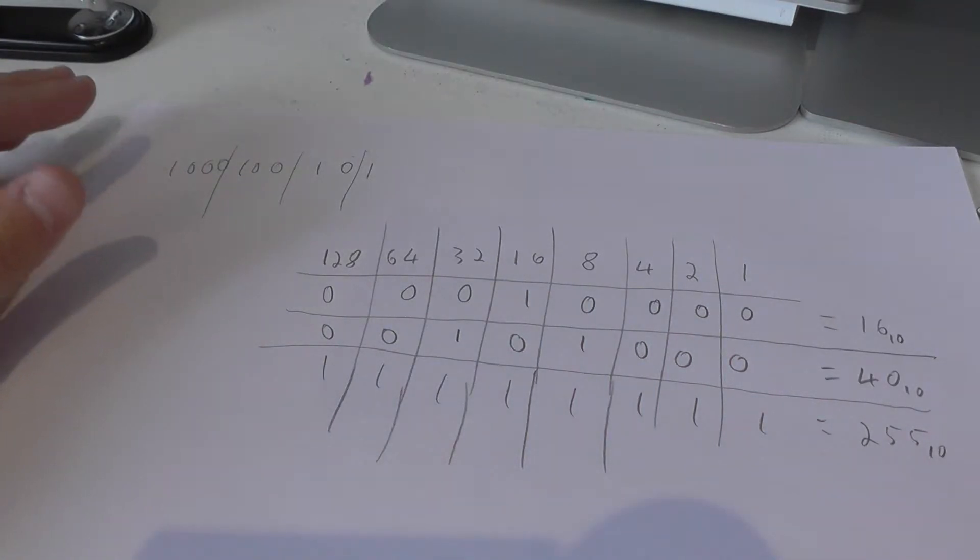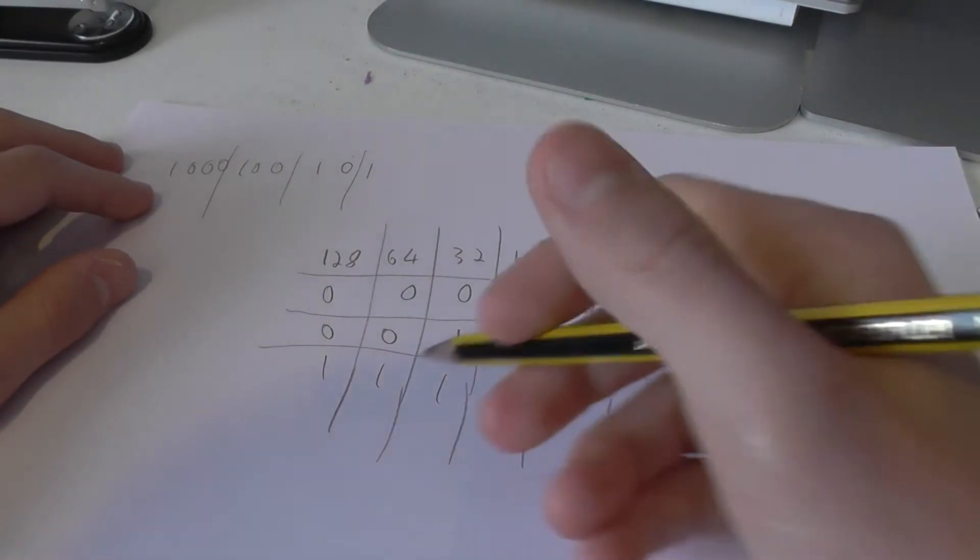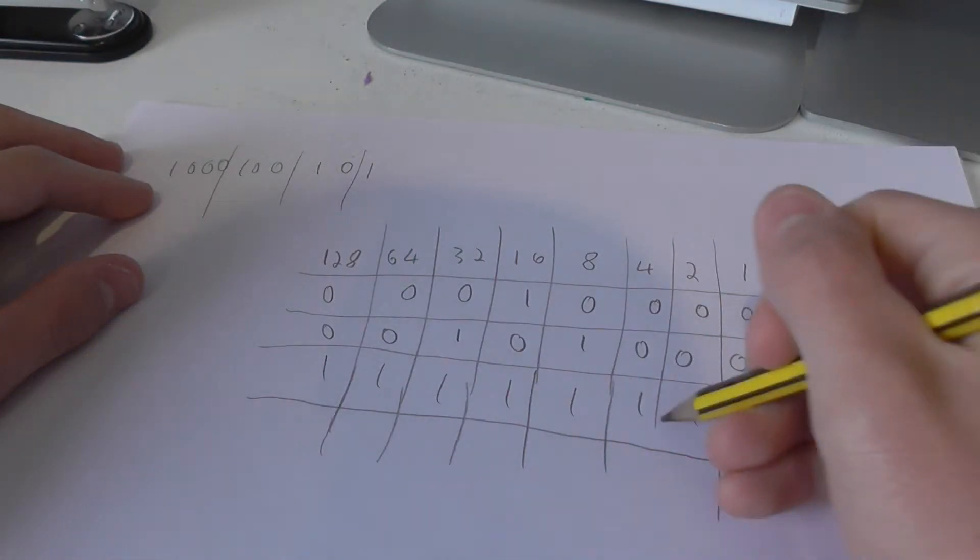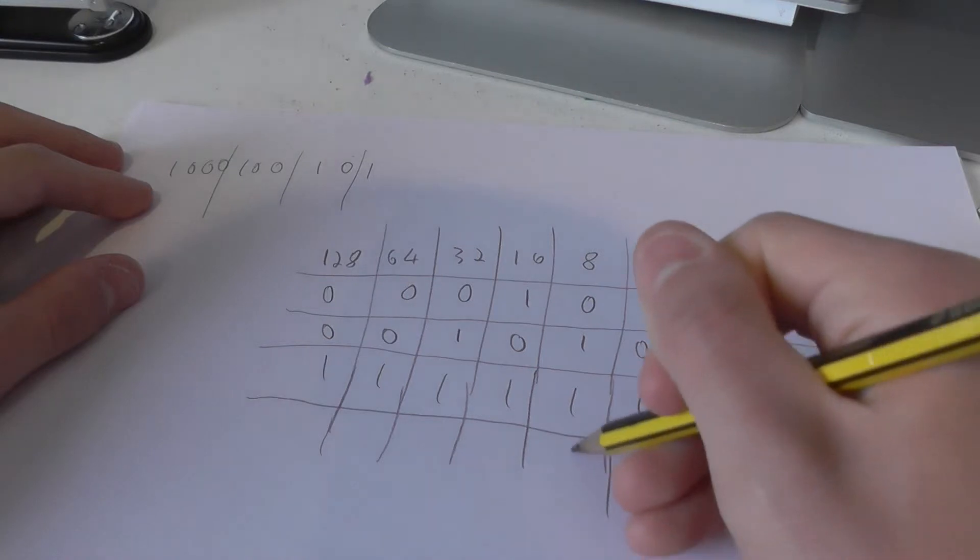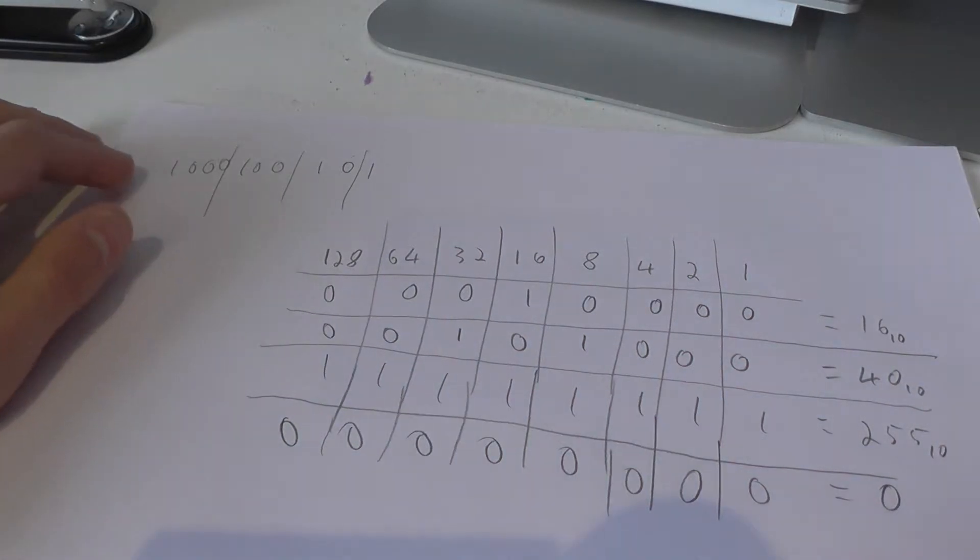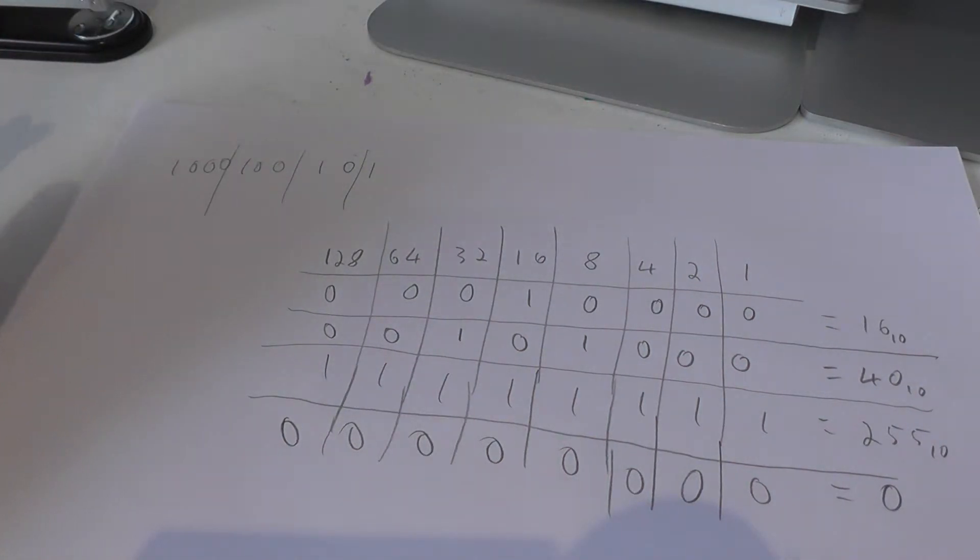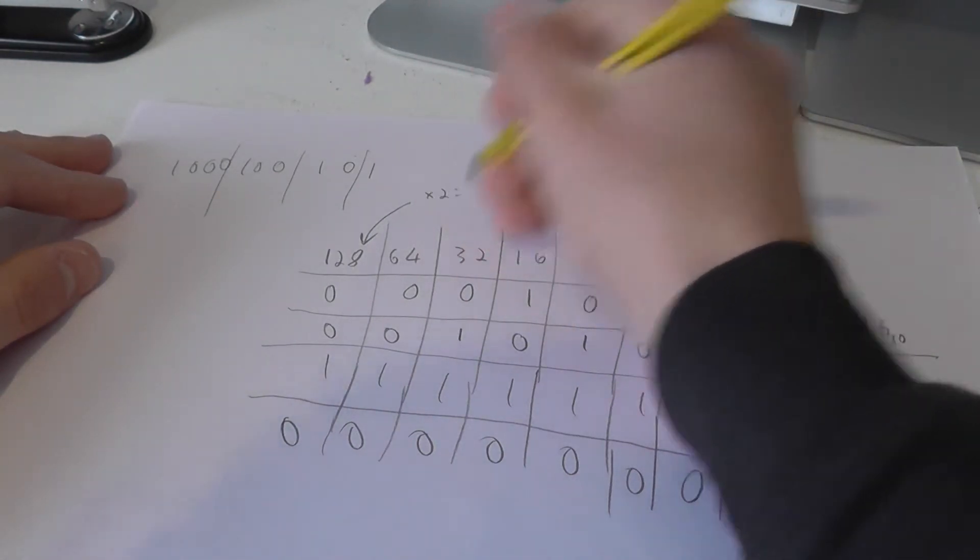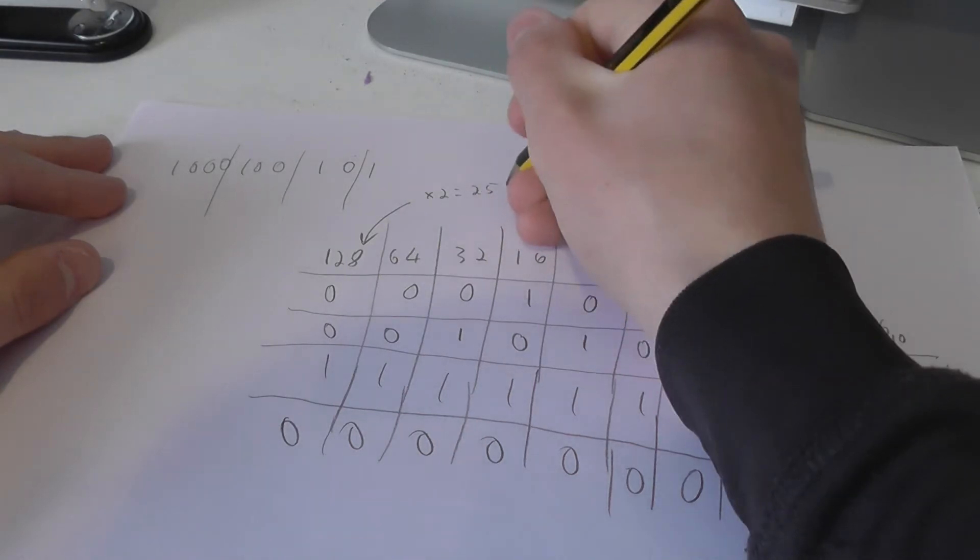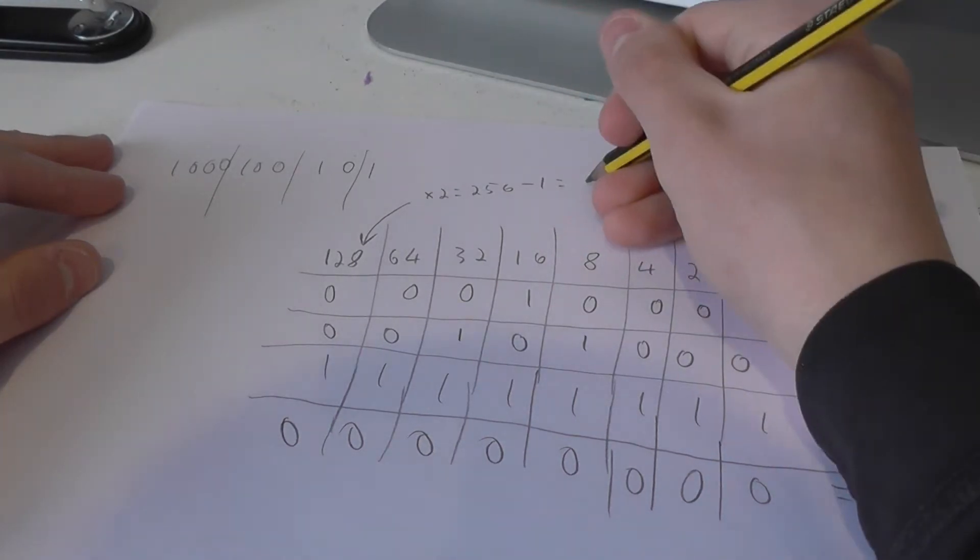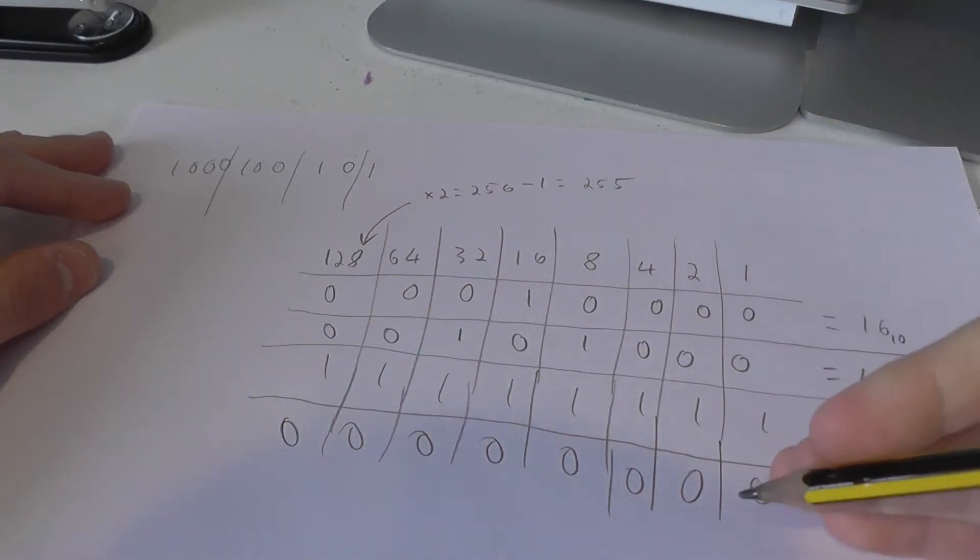The highest number a byte can store is the number 255. We say it can store 256 values, though, because whilst it is able to store up to the number 255, we are forgetting about one number there, and that number, of course, is 0. So that's 256 values. The way we can work it out is we take that last column, which is 128, we times it by 2, that is 256. That is the amount of values we can have. Then we minus 1, and that gives 255.